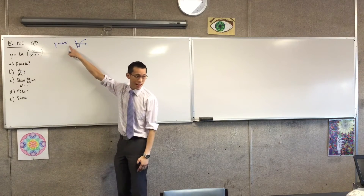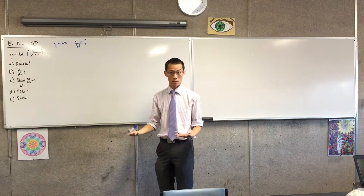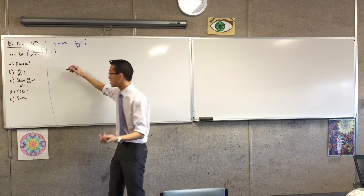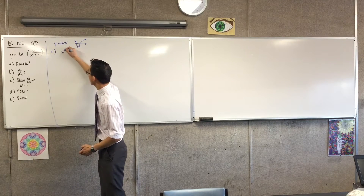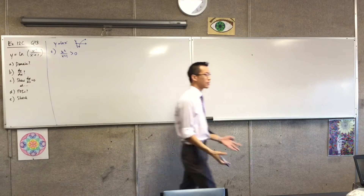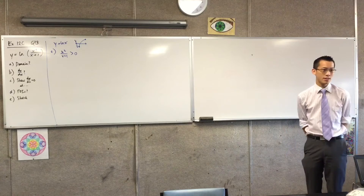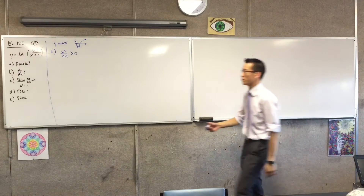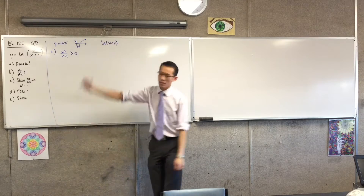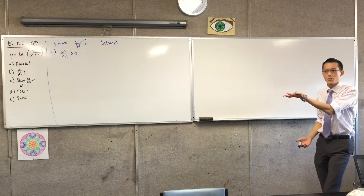What we want is that piece inside the log - the argument we're taking the log of - we want that to be positive. So for part A, to get the domain, what I want is for x² divided by (x+1) to be greater than zero. That's all it means. You can throw anything in there as the argument and apply the same logic.